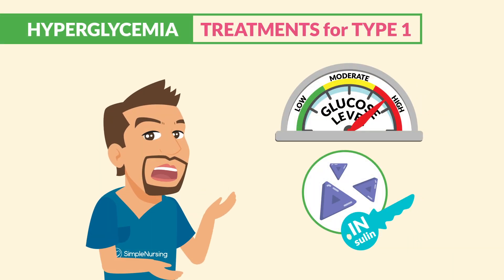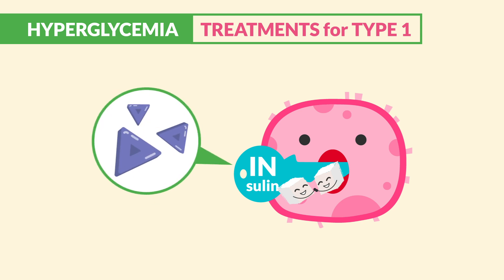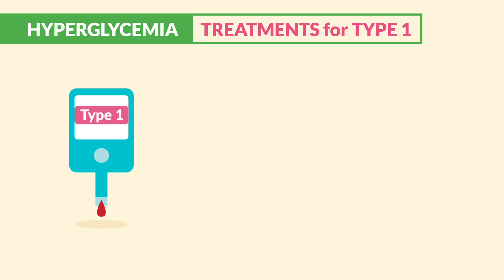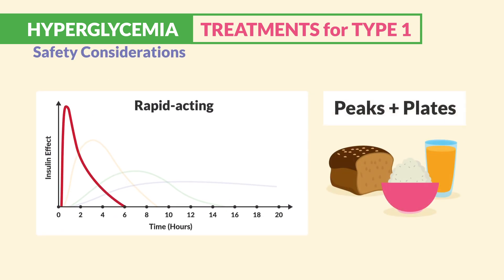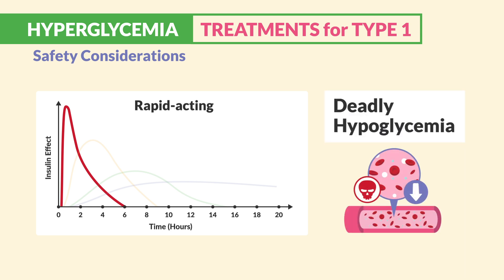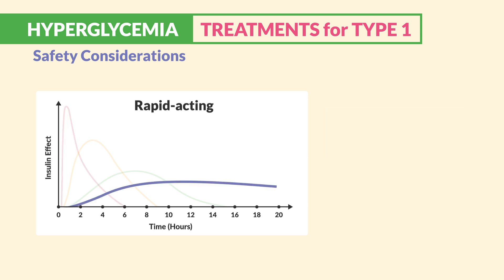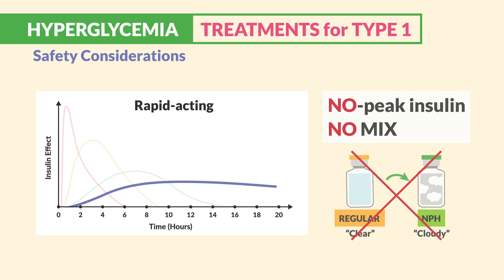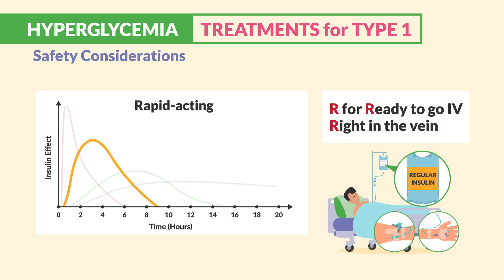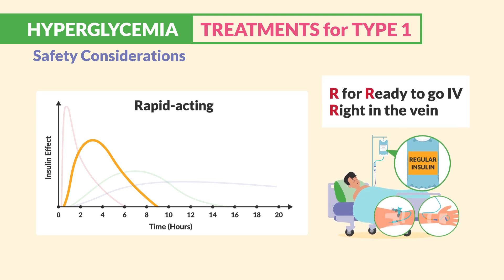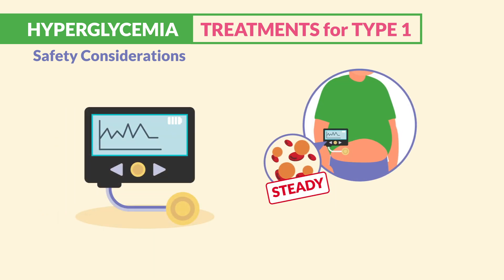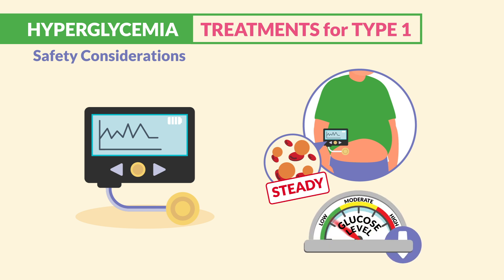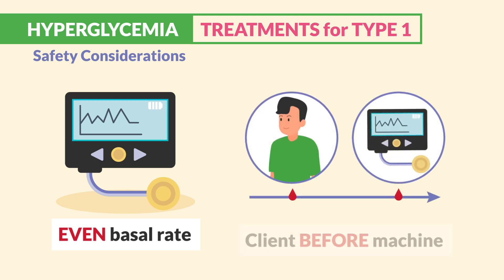To treat high blood sugar, we use insulin to put that sugar back into the cell. In type 1, there's no insulin, so these clients are insulin-dependent for life. Key considerations: think of peaks and plates — we always give food during peaks, and you have to know the signs and symptoms of hypoglycemia when blood sugar is really low. For insulin safety: insulin with no peak requires no mixing. Only regular insulin can be given IV — remember the R for regular insulin is right in the vein. Always draw up clear to cloudy. Clients can also use insulin pumps, the CSII, whose number one benefit is delivering a steady dose of insulin with fewer swings in blood sugar. It provides a nice even basal rate. Always assess the client before the machine.